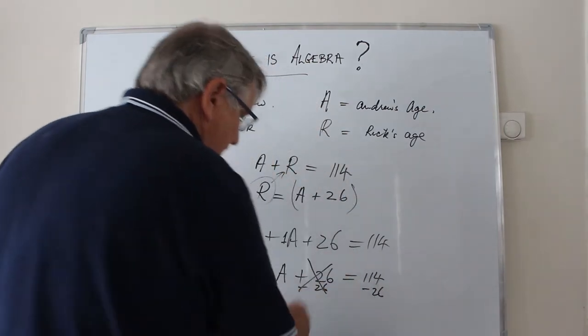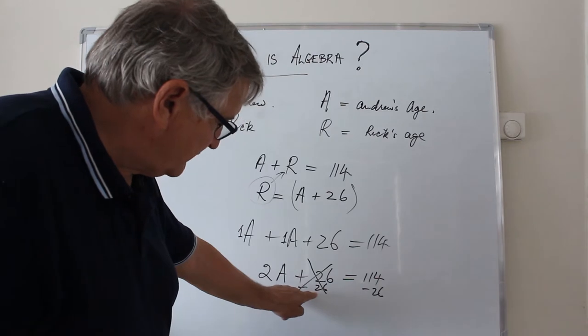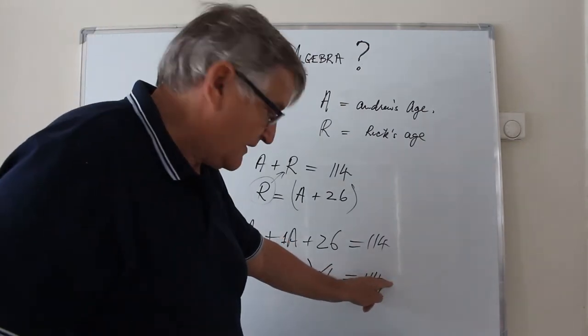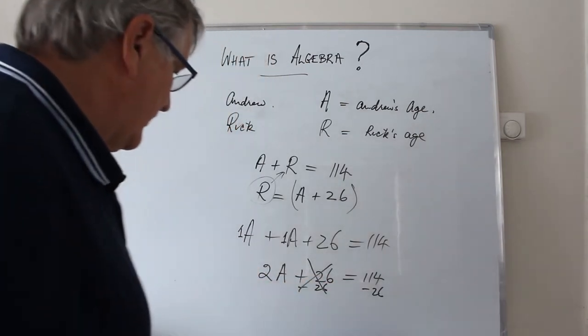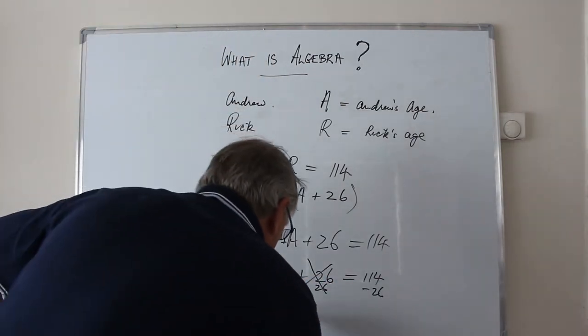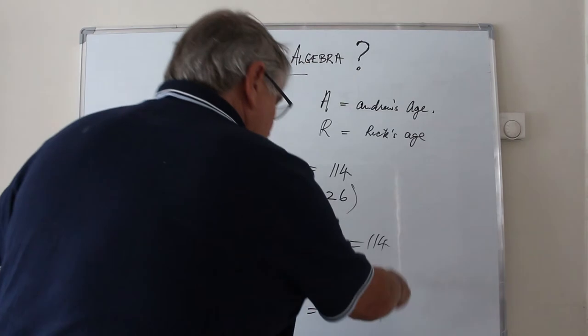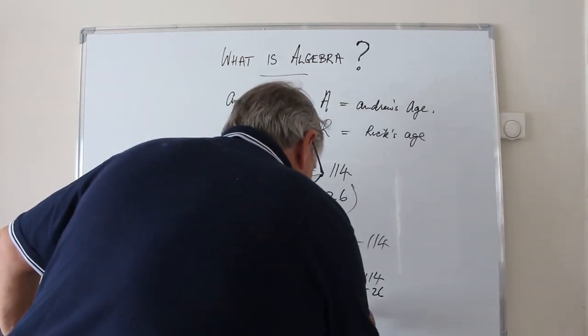26 minus 26 is 0. Whatever you do to one side of an algebraic equation, you have to do to the other side because that maintains the integrity of the equal sign. So 2 times Andrew's age is equal to 6 from 14 is 8.